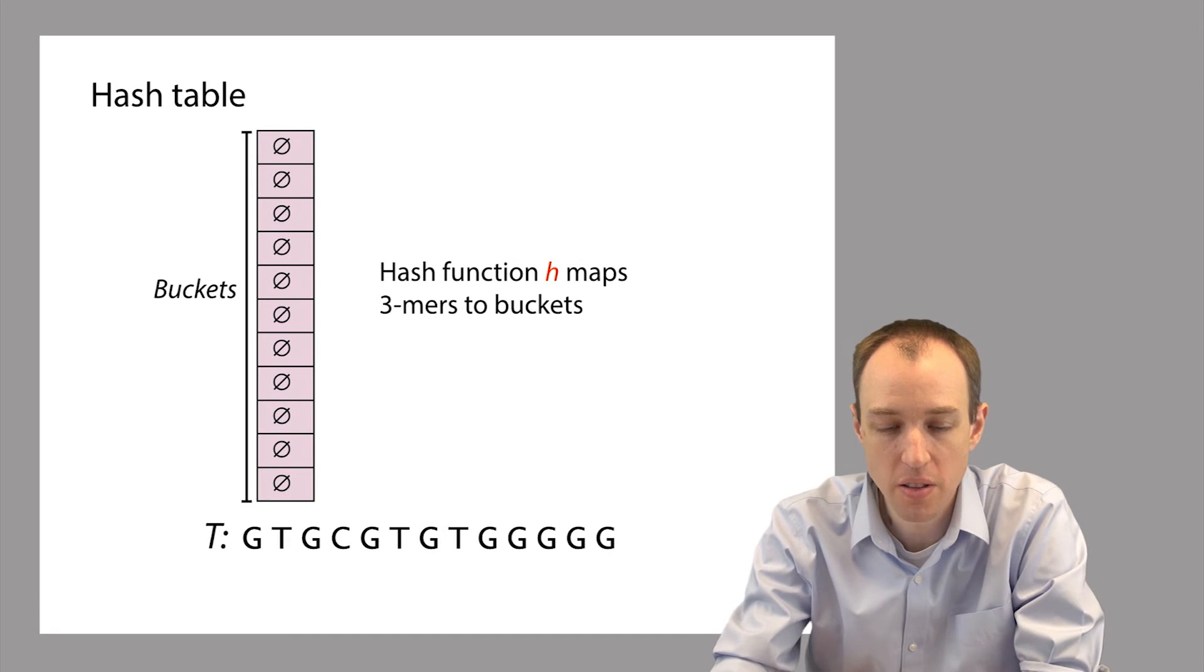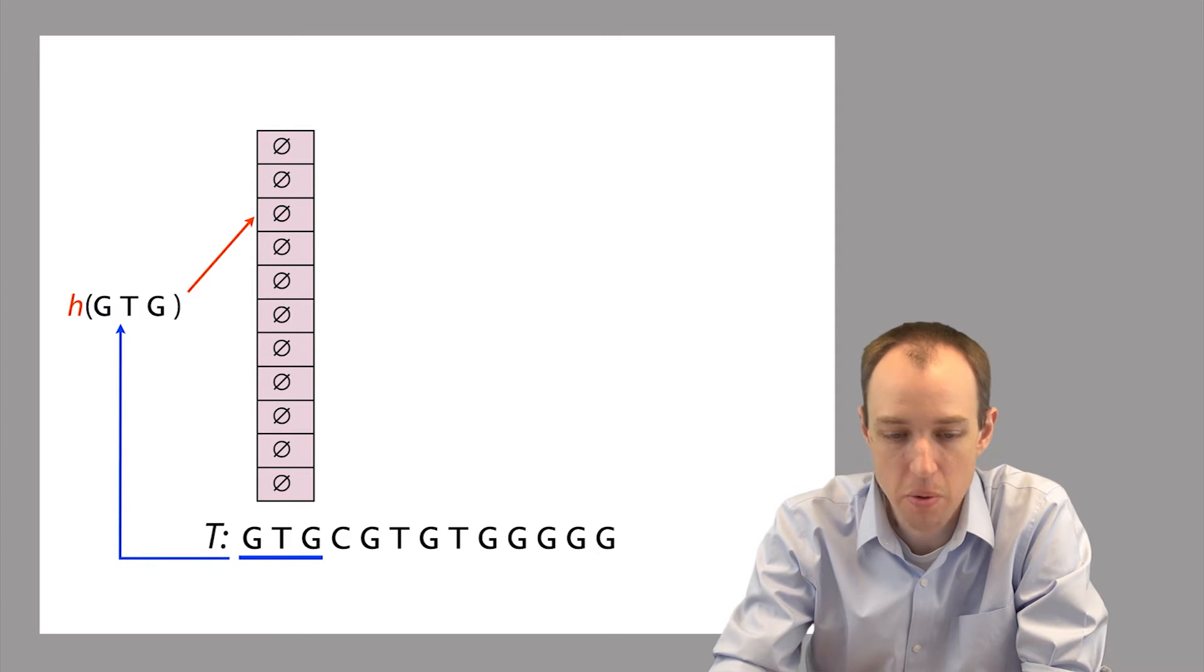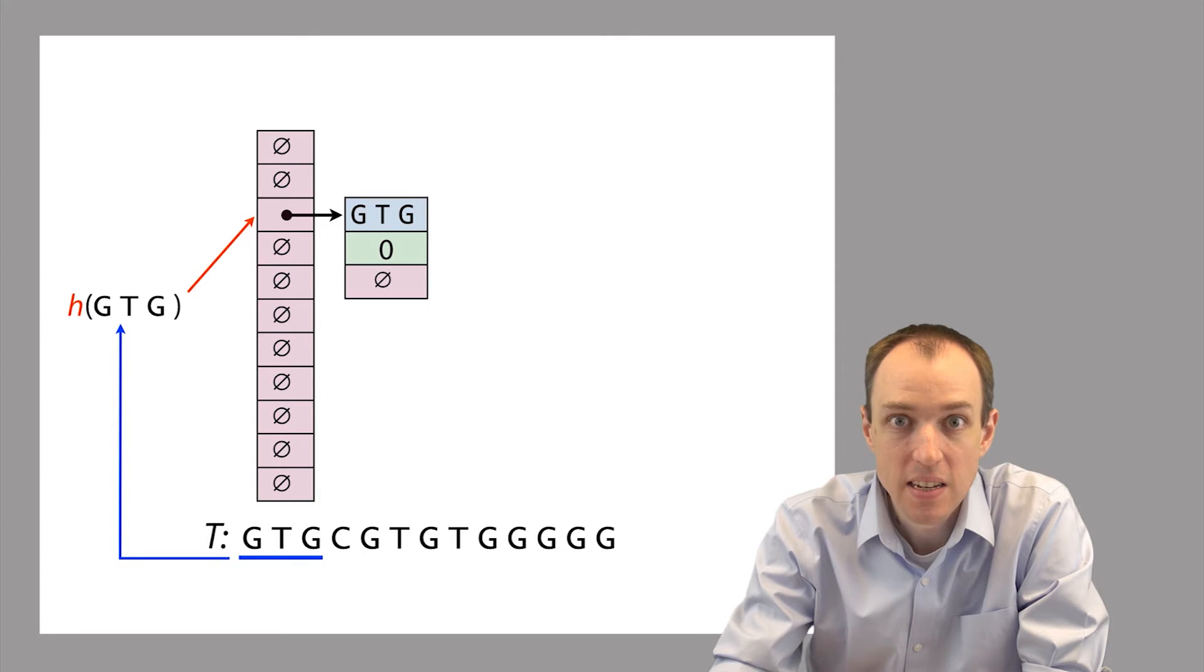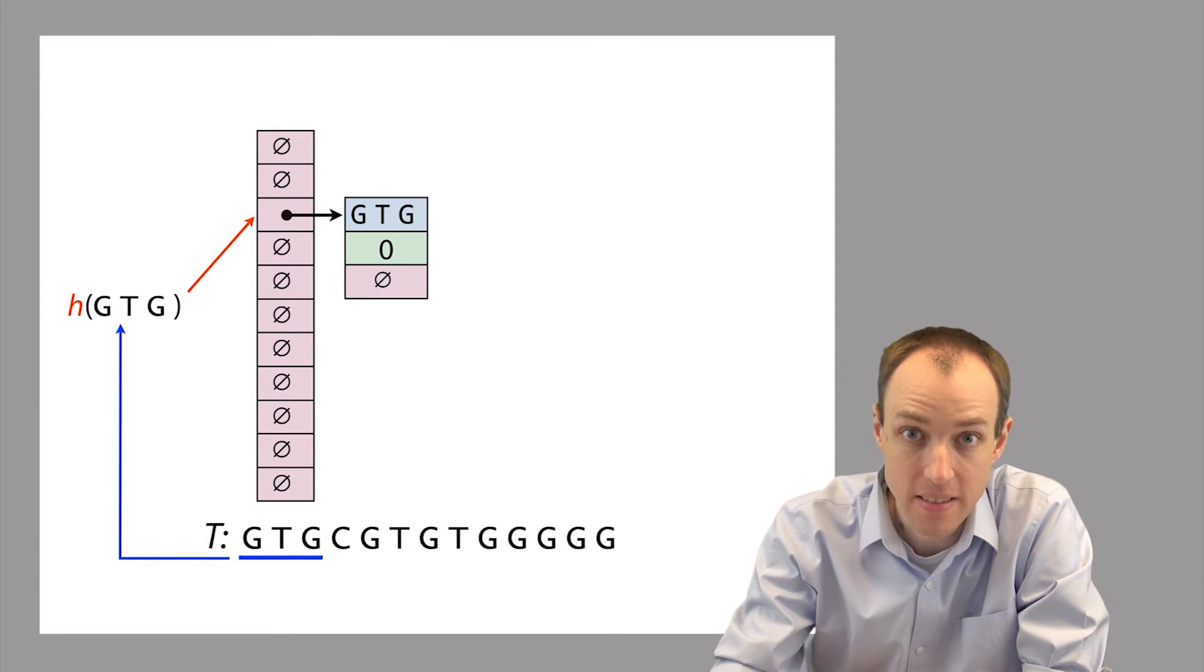So now let's add all of the 3mers of T to this table. So we'll start with the first 3mer. And we use our hash function to assign it to a bucket. And let's say the hash function assigns it to the bucket indicated with the red arrow here. And so now we append the corresponding key value pair to this bucket like this. So a given bucket is simply a linked list. So to add our key value pair, we're simply appending an entry onto that linked list.